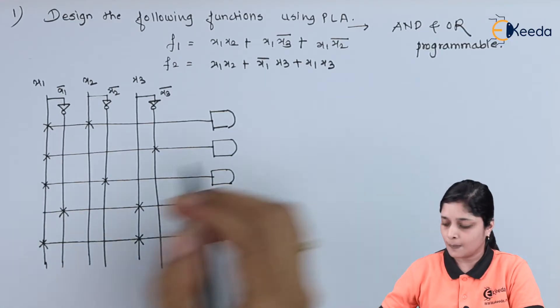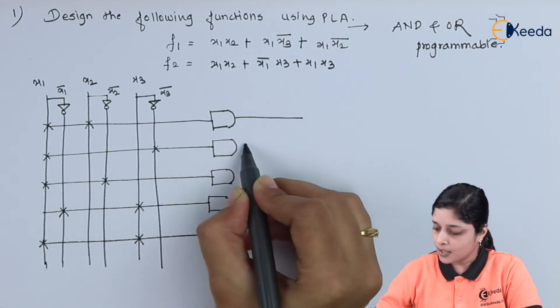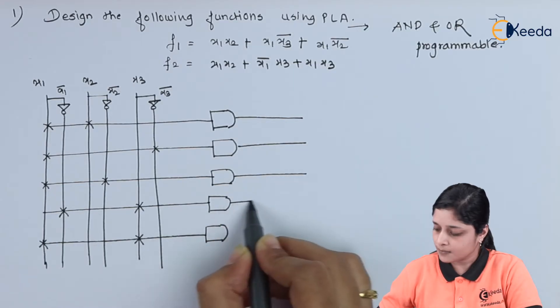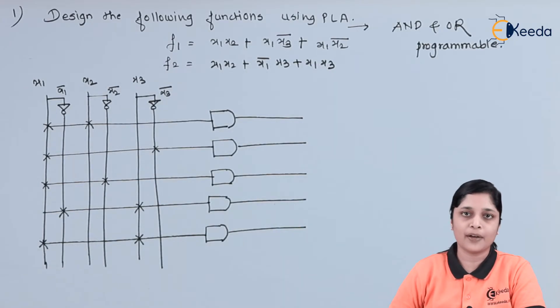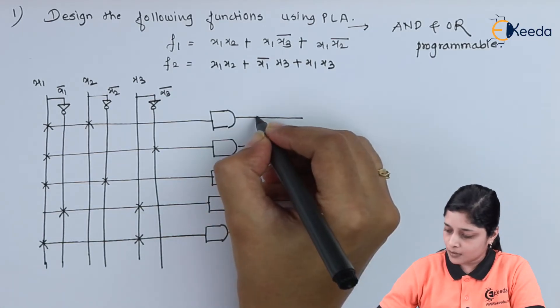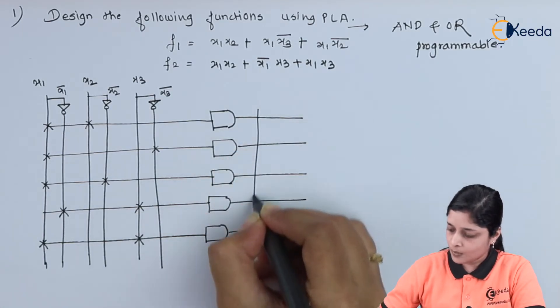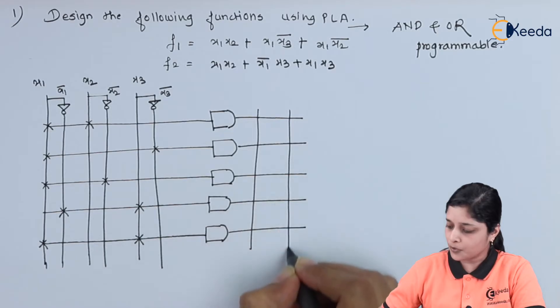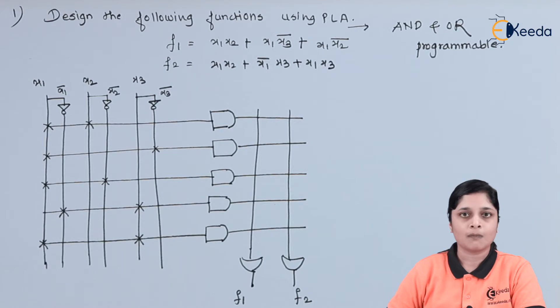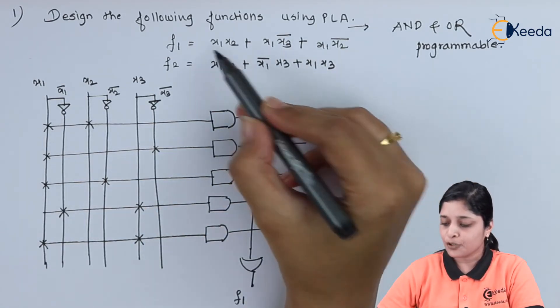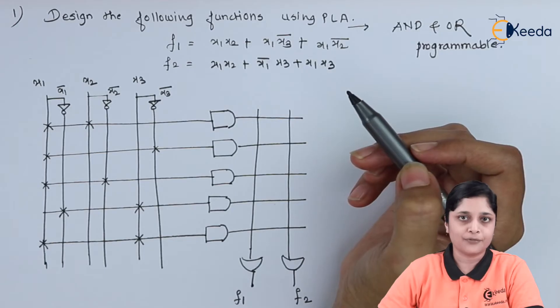Now after drawing the AND gates, you have to see how many output functions are there. Two number of output functions are there, and for that we will require two OR gates. This is for f1 and this is for f2. Now you have to focus on function 1, that is f1.